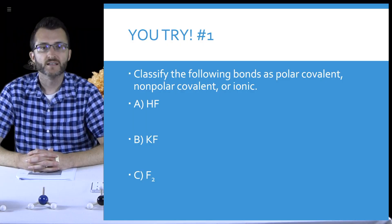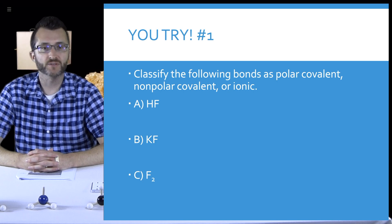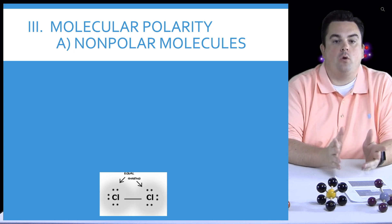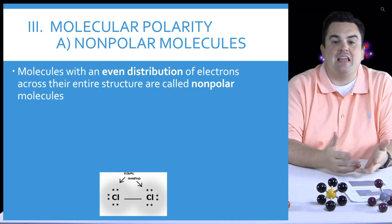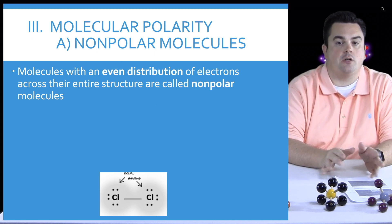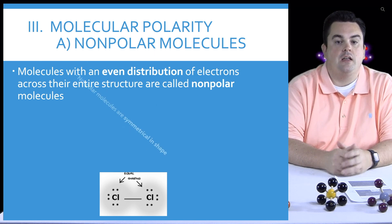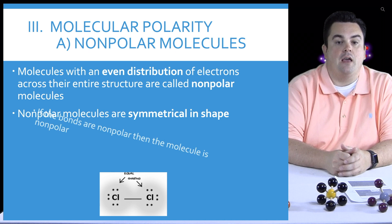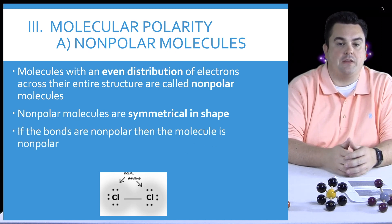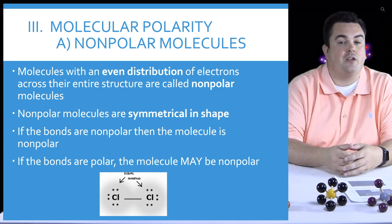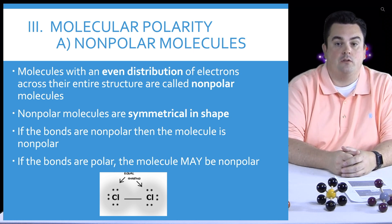You try number one: classify the following bonds as polar covalent, non-polar covalent, or ionic. Now let's take a look at some molecular polarity for non-polar molecules. Molecules with an even distribution of electrons across their entire structure are called non-polar molecules. Non-polar molecules are symmetrical in shape. If the bonds are non-polar, then the molecule is non-polar. If the bonds are polar, the molecule may be non-polar — it depends on the shape.